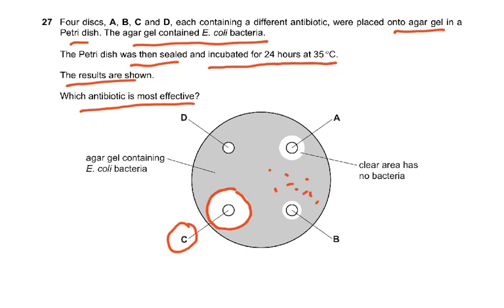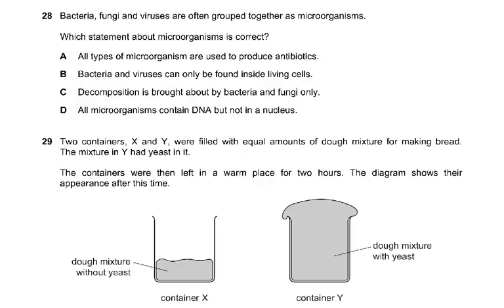Question 28: Bacteria, fungi and viruses often group together as microorganisms. Which statement about microorganisms is correct? All types of microorganisms are used to produce antibiotics? No, viruses cannot produce any antibiotics. Only fungus - a fungus called penicillium produces an antibiotic. Bacteria and viruses can only be found inside living cells? No, bacteria can be found inside yogurt.